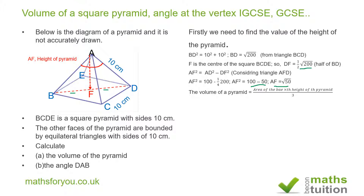You need to memorize this formula because in the current exam system it will not be given to you. The volume of the pyramid becomes 10 times 10 times root 50 divided by 3, which gives us 237.7 cubic centimeters to one decimal place. Now moving on, we want to find the angle DAB.